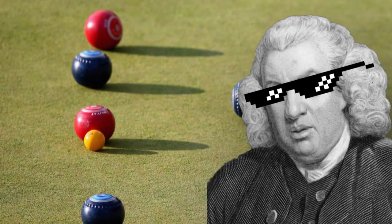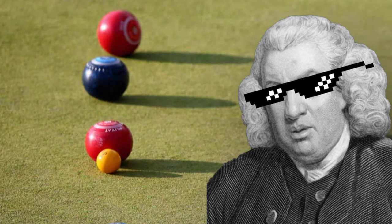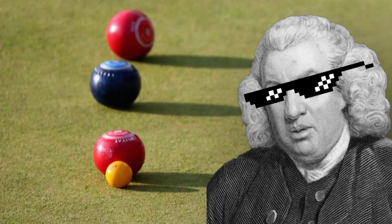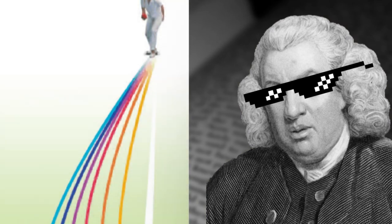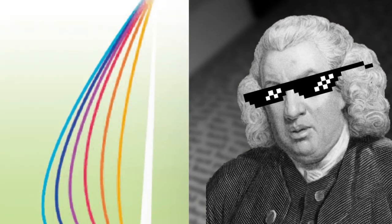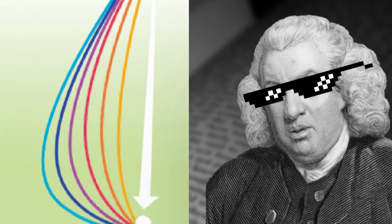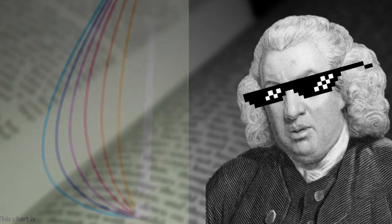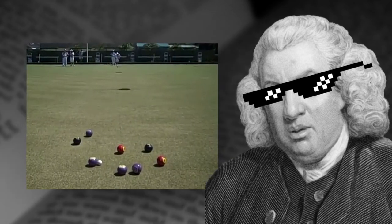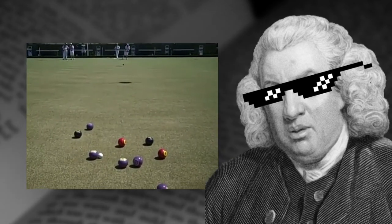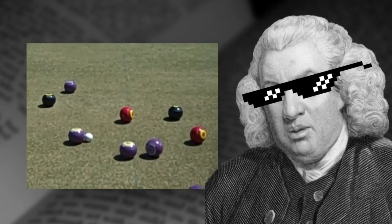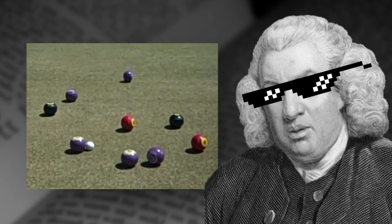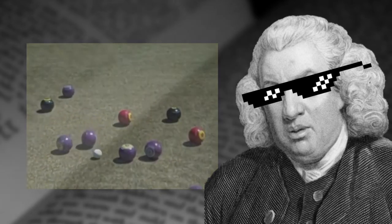Eventually, bias became a technical term in the sport called lawn bowling in the 1560s, to refer to the side of a ball that is heavier. Making one side of the ball heavier caused its path to either lean or hook in the direction of the bias. In the 1570s, an obvious analogy was made between the weighted balls and the heads of people with an undue prejudice or propensity for one side or another in law proceedings. This is where we get the current definition of the word bias in English.